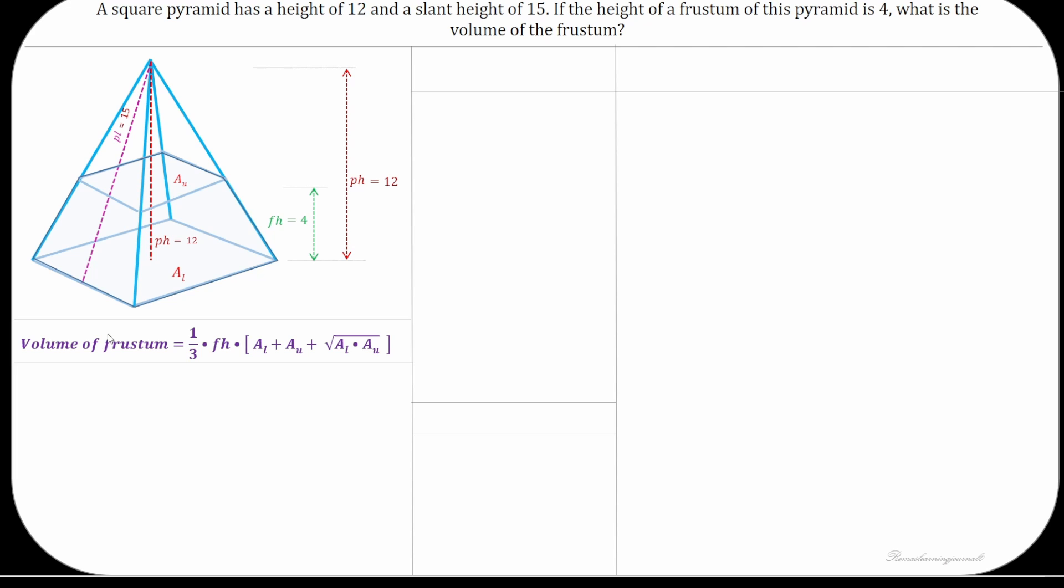Let's consider the side length of lower base is A. Since a right angle triangle is formed by half of the side length A and height pH and the slant height PL, we can use Pythagoras theorem to find the side length A.